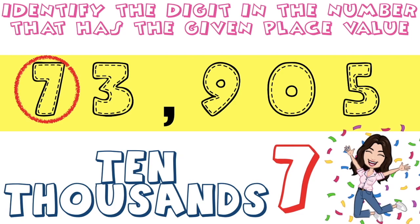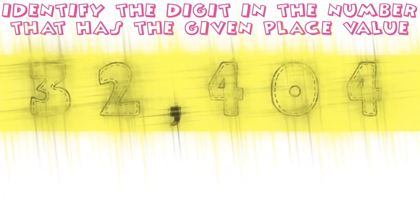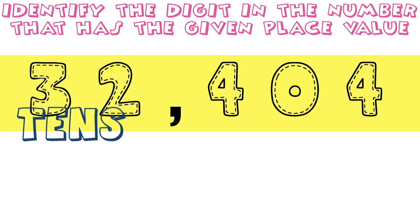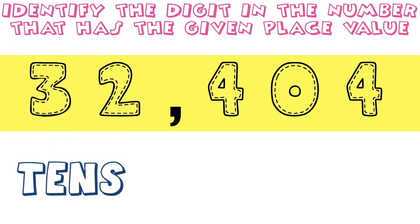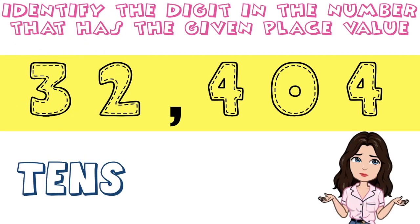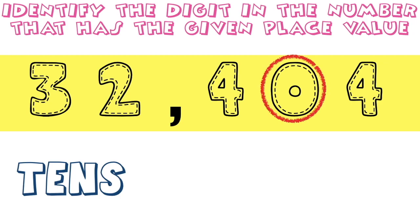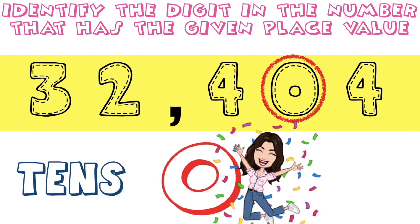How about if we have 32,404? What is the digit in the tens place? Let's do it together, children. Speak louder. Starting from the right: ones, tens. So digit 0 is in the tens place.